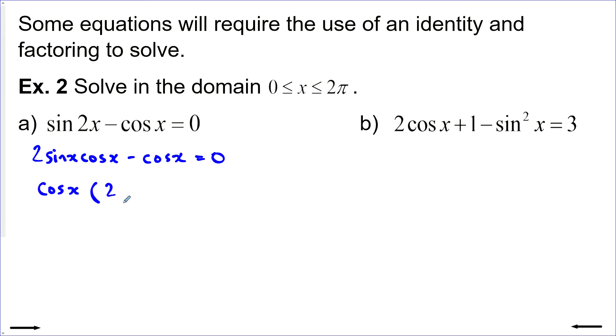We're left with 2 sine x minus 1 equals zero. And now I can solve this. Because this one here is cos x could equal zero. And this binomial here is 2 sine x minus 1 could also equal zero. And I solve these independently.